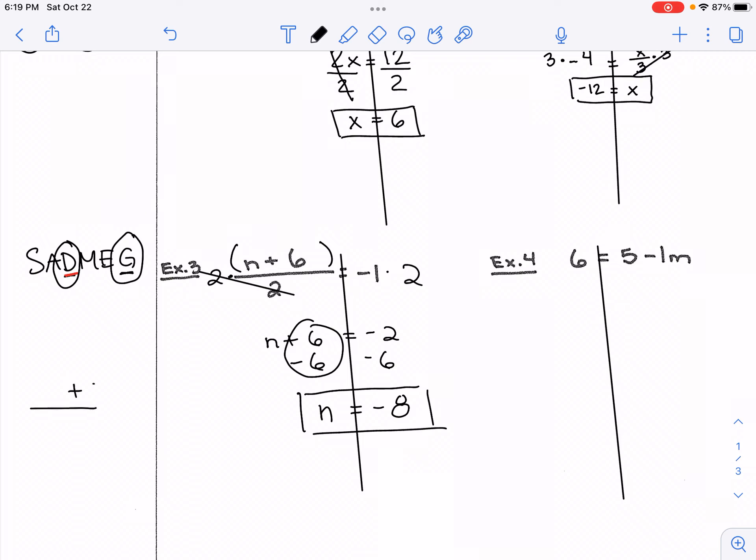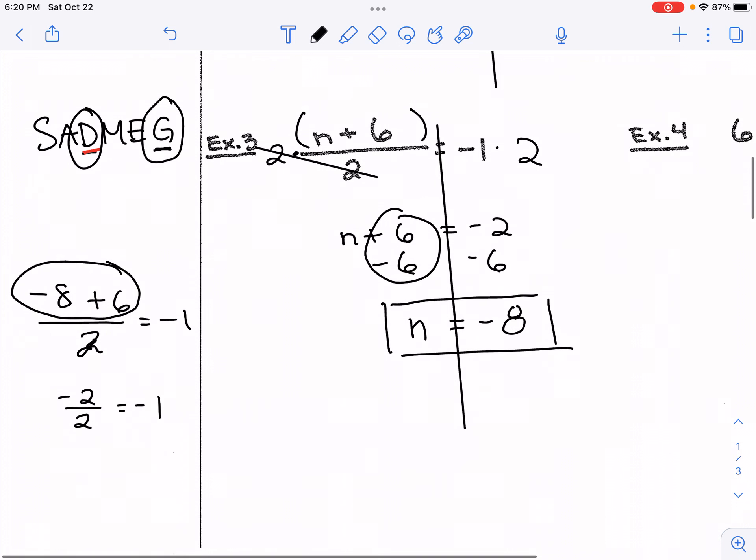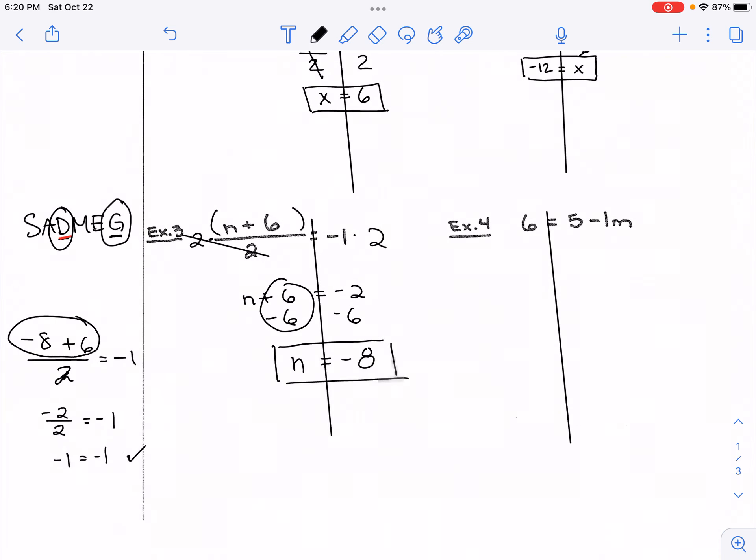So instead of n plus 6 divided by 2, we'll put negative 8 plus 6 divided by 2. If we simplify this, I'll simplify my numerator: negative 8 plus 6 is negative 2, I'll rewrite everything else, and negative 2 divided by positive 2 is negative 1. This is a true statement, negative 1 equal to negative 1. That is the final answer, so we've checked it. I'd like for you to determine the answer and process for example 4. So pause the video here, but I'm going to move on to the back side where we have what are called like terms here.